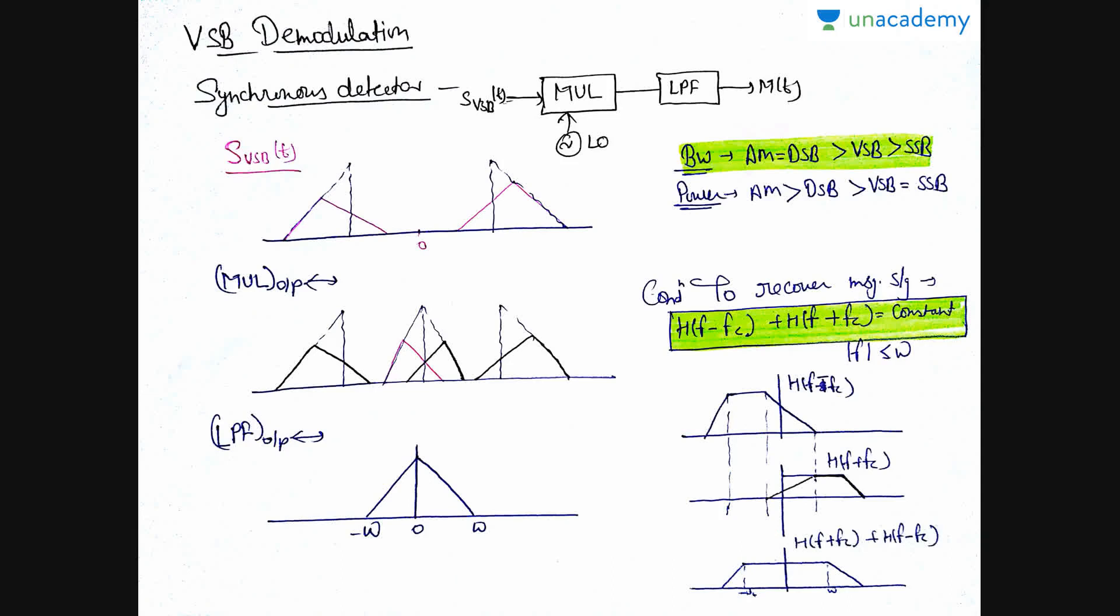When this H(f) gets shifted by minus FC, that is, get delayed, that time, this is the spectrum. And when H(f) is shifted by plus FC, that is, the advancing, we will get this signal. And when these two get added, that time, the function is this. So, this function follows the transfer function of the system, which completely passes this message signal and we can recover the message signal in the output. So, this is the demodulation of the VSB signal.